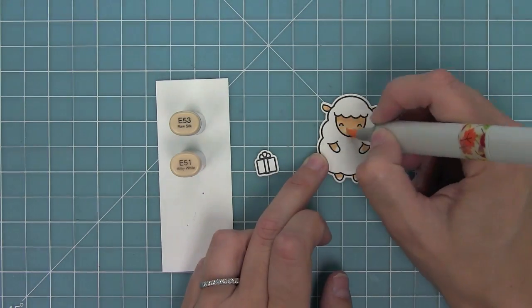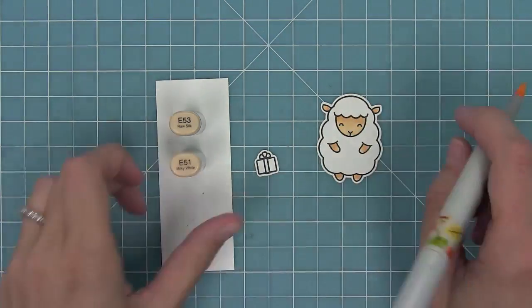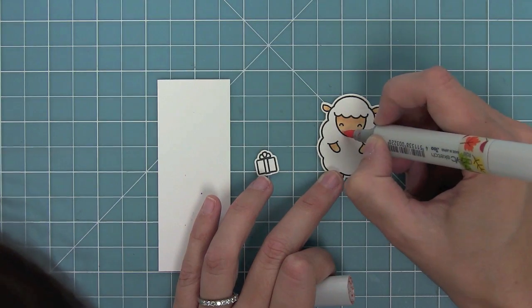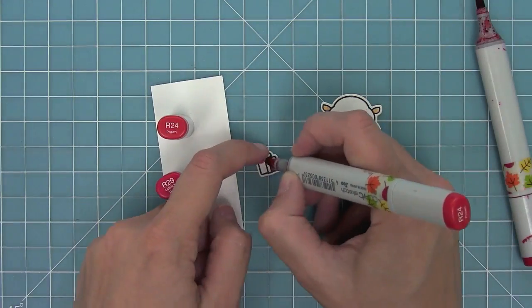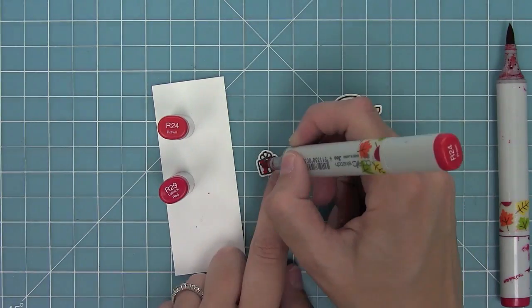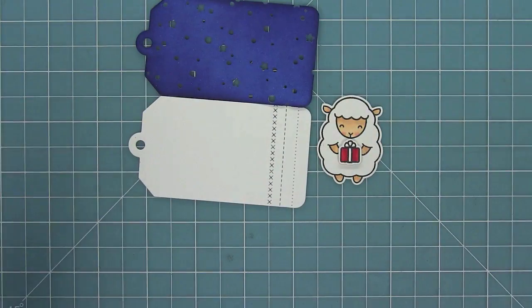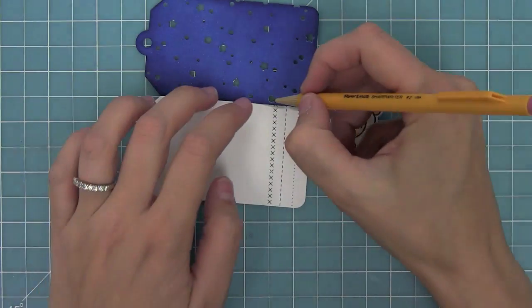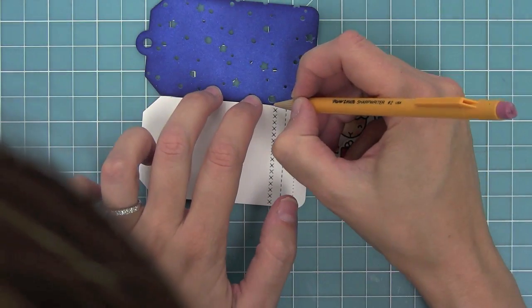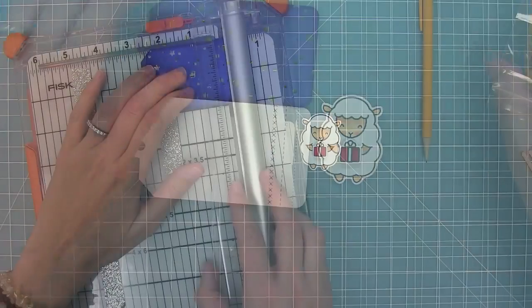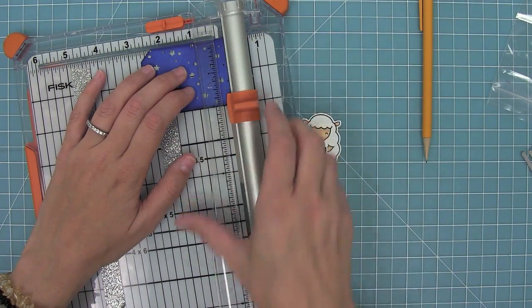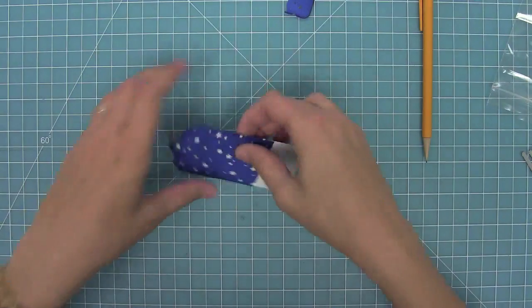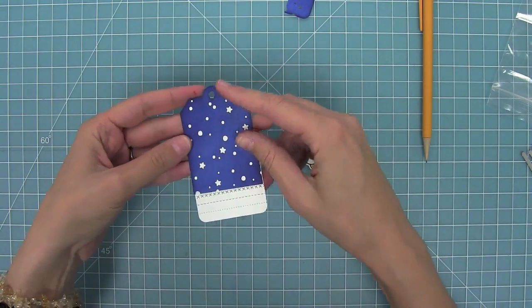And I'm just going to quickly color him in nice and simple because I want to be able to make a lot of these tags. So I'm going to add some little rosy cheeks there and then color in my present too, just adding a little darkness around the white ribbon part and blending that out. Now next I'm going to make a little pencil line right above where that stitching is so that I know where to trim off my tag. Then I can line up that little pencil line in my trimmer, cut it off right there. And now I'll be able to layer that on top but the stitching will still show through along the bottom.